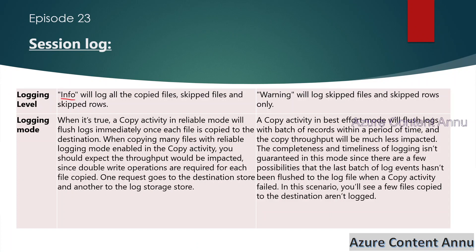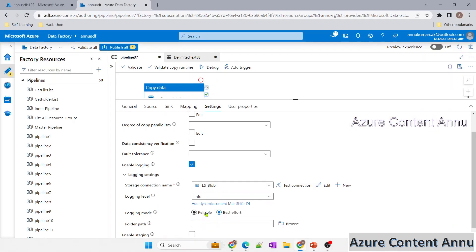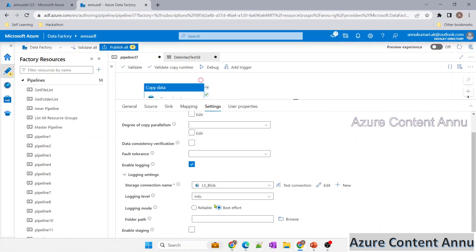If you select info in the logging label, it will log all copied files, skipped files, and skipped rows — basically all information related to every operation the copy activity is performing. But if you select warning, it will only log skipped files and skipped rows information — it will not capture details of files that are successfully copied. In our case, I'm selecting info so it logs all operation details.